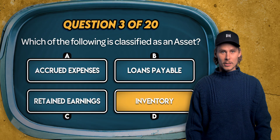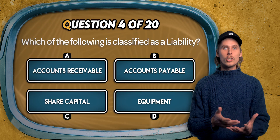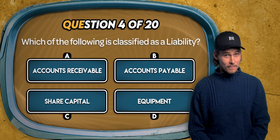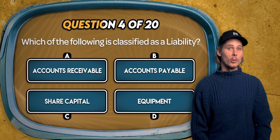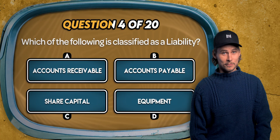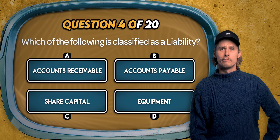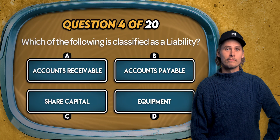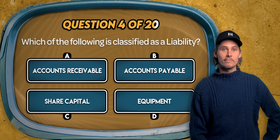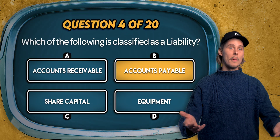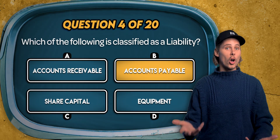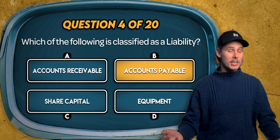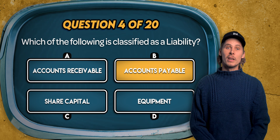Question 4. Which of the following is classified as a liability? Is it accounts receivable, accounts payable, share capital, or equipment? The answer is B: accounts payable is a liability because it represents money that a business owes to suppliers. This means it has an obligation to pay them in the future.